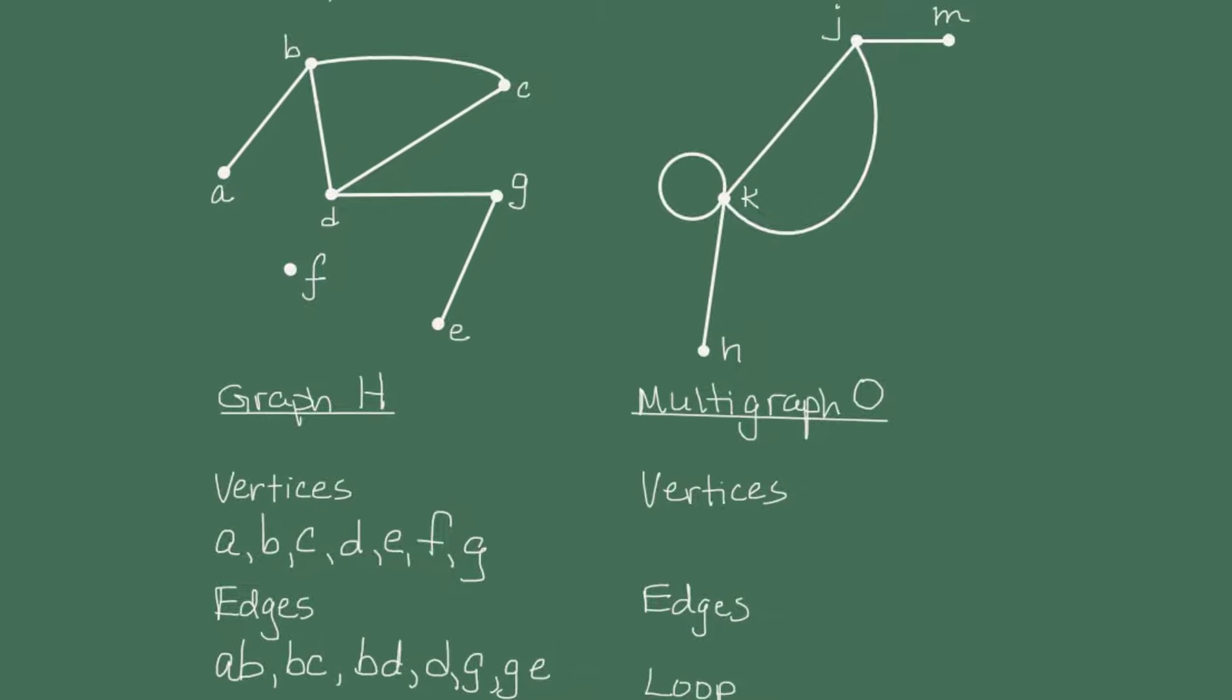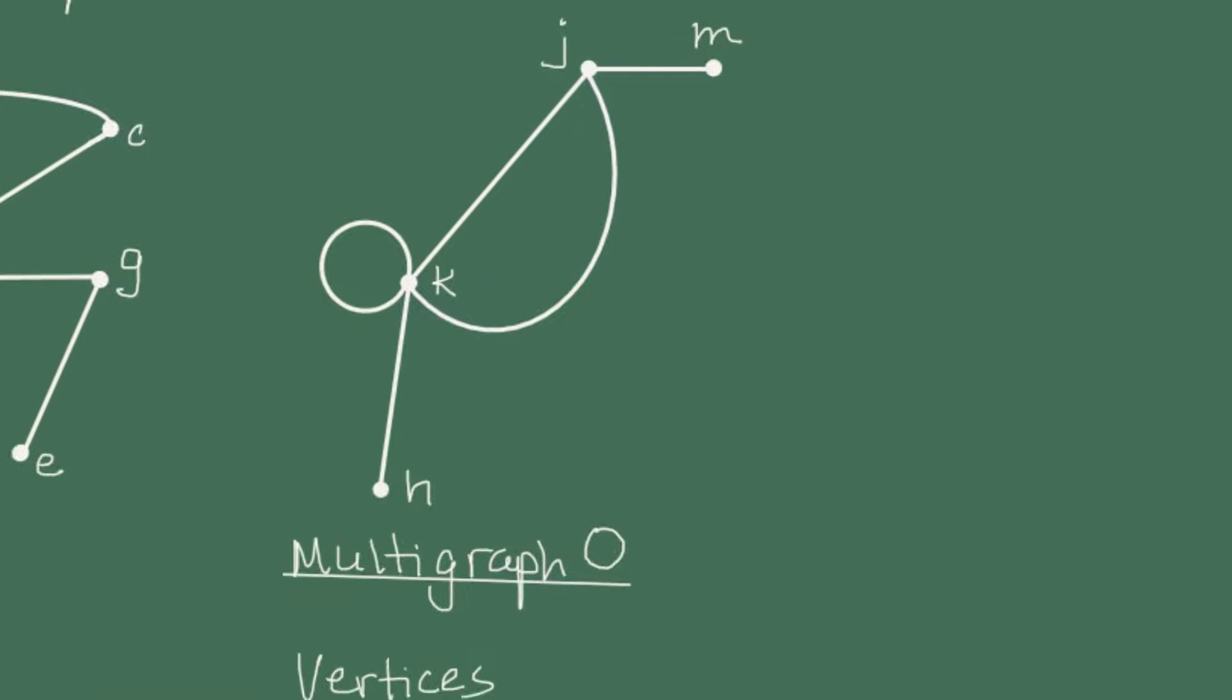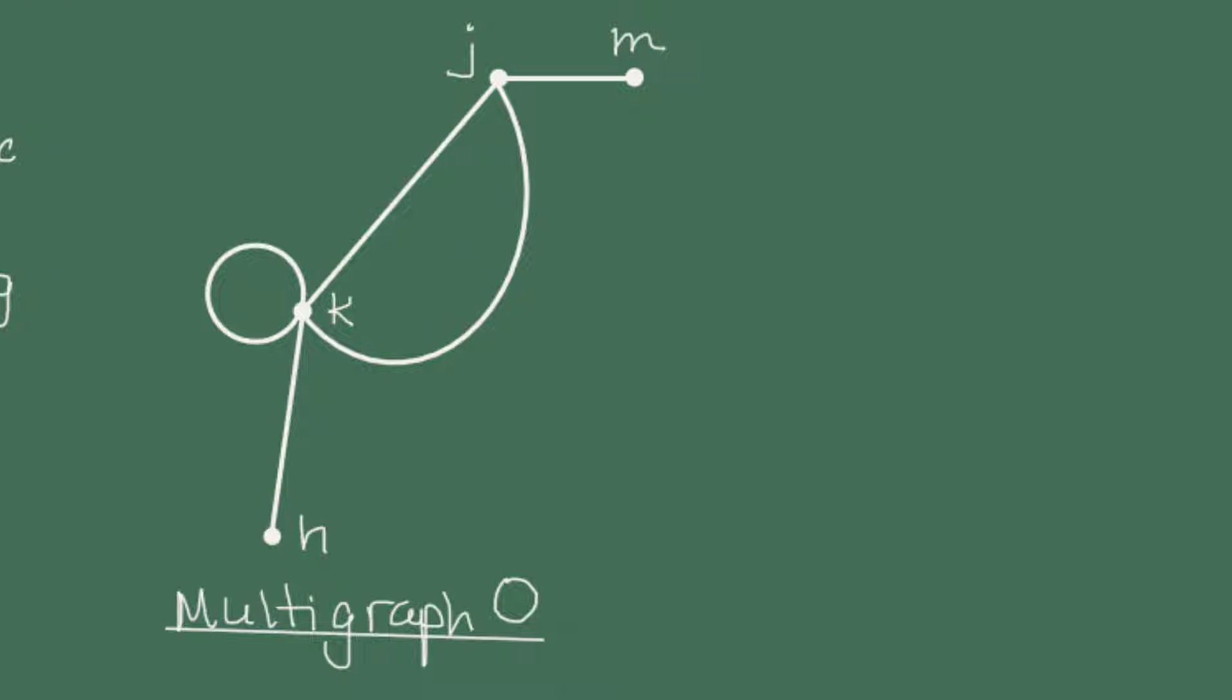This is different than a multigraph like multigraph O. What makes graph O a multigraph are two characteristics. First of all,